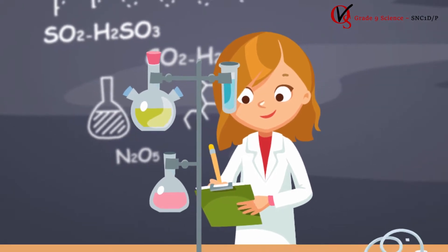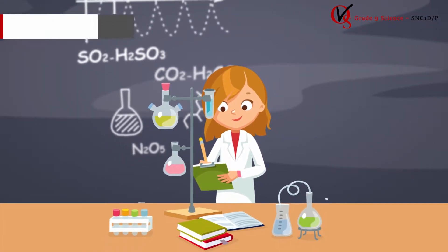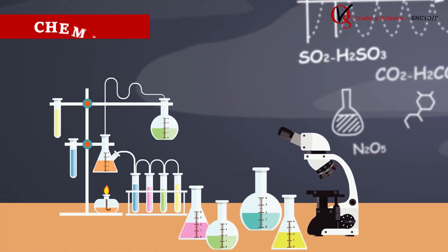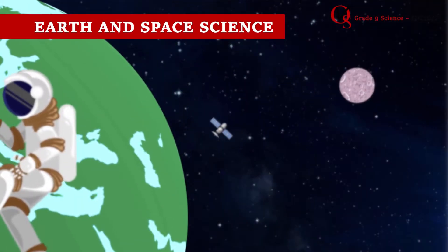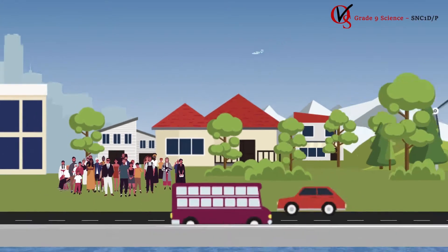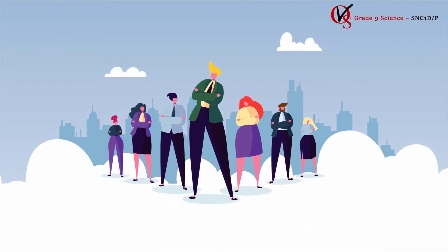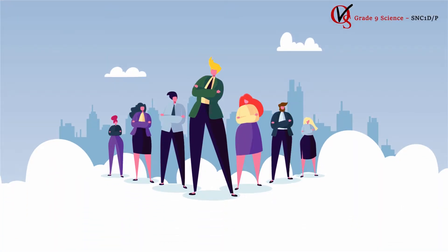Grade 9 science allows students to develop their understanding of basic concepts in biology, chemistry, earth and space science, and physics, and relates these areas of study to technology, society, and the environment. Throughout this course, students will learn the essential processes of scientific investigation, which form the basis for all future paths of study across the sciences.